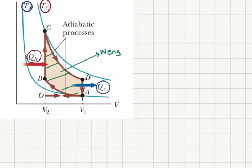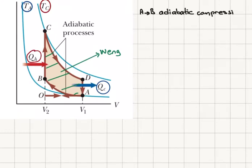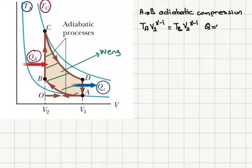What I would like to do is calculate the theoretical efficiency of this cycle. Let's start from A to B: the adiabatic compression. For this process I can write temperature at point A times V1 to the gamma minus 1 equals temperature at point B times V2 to the gamma minus 1. There is no heat input; there will be work generated by this process from A to B.